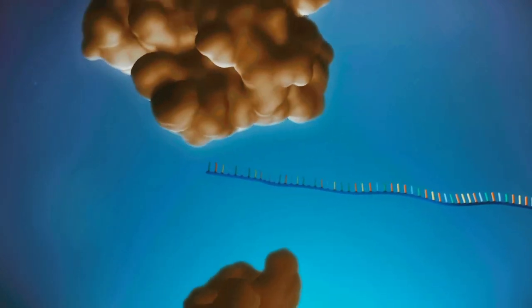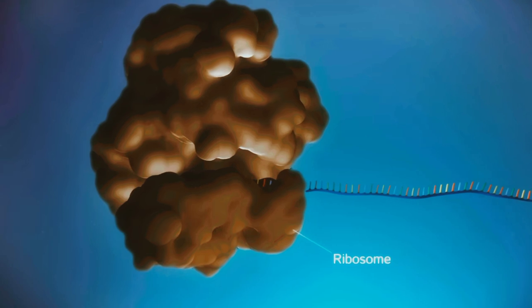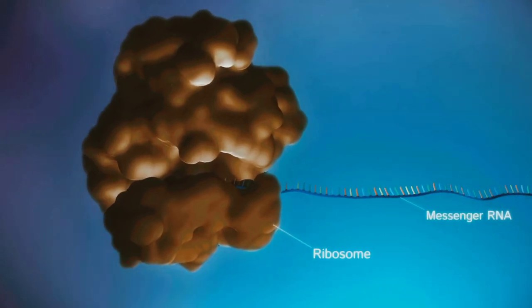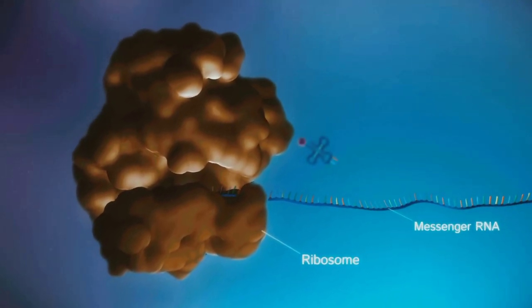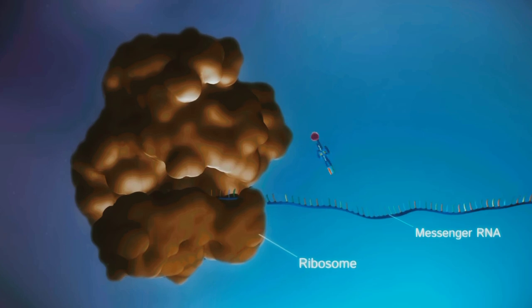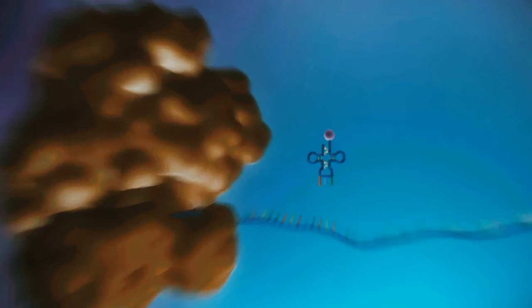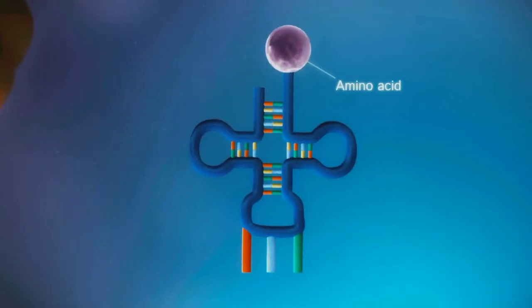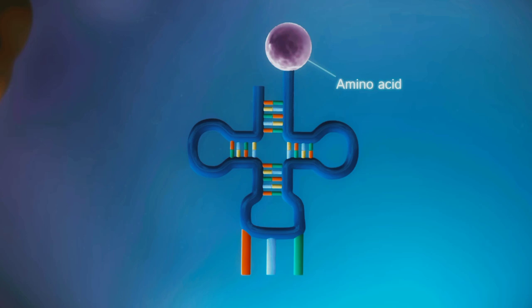Protein factories in the cytoplasm, called ribosomes, bind to the messenger RNA. The ribosome reads the code in the messenger RNA to produce a chain made up of amino acids. There are 20 different types of amino acids. Transfer RNA molecules carry the amino acids to the ribosome.